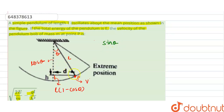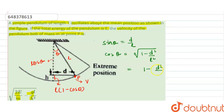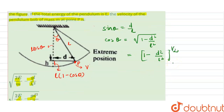From the figure, sinθ = d/l, so cosθ = root over of (1 - d²/l²). Since d is very small, using the binomial expansion, cosθ ≈ 1 - d²/(2l²). This is our expression for cosθ.